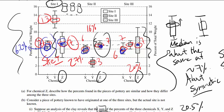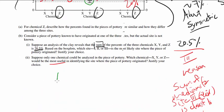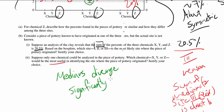But how about Chemical Y? Well, Chemical Y is pretty nice because the medians diverge significantly for each site for Chemical Y.